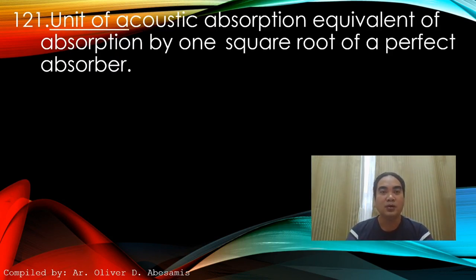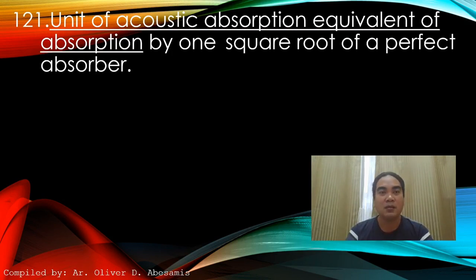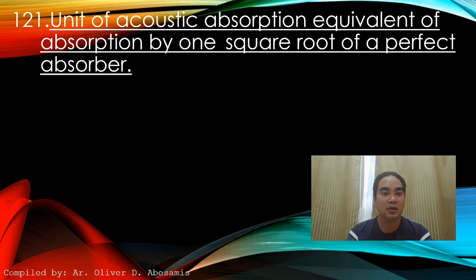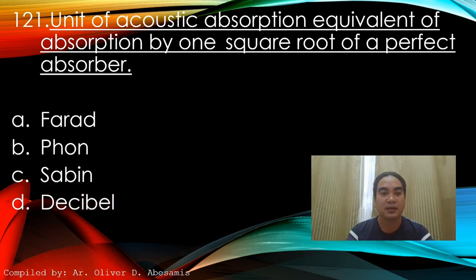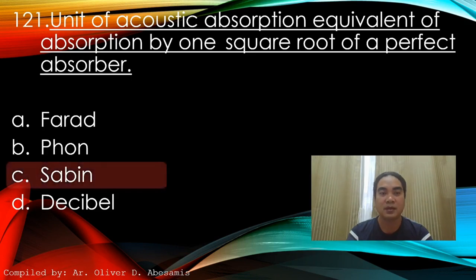Question 121: Unit of acoustic absorption equivalent to the absorption by one square foot of a perfect absorber. A) Farad, B) Phon, C) Sabin, D) Decibel. Answer: C) Sabin.